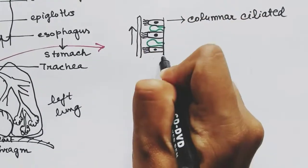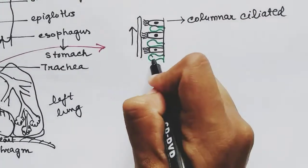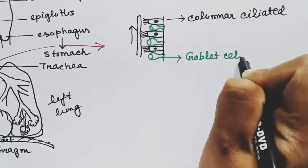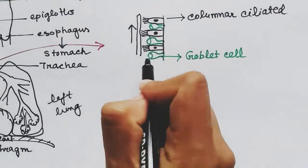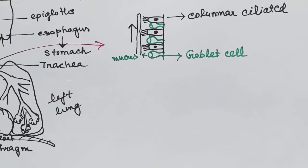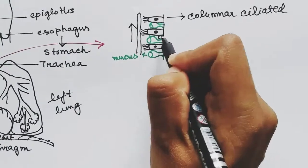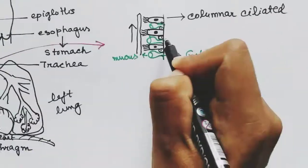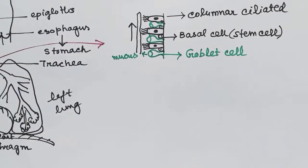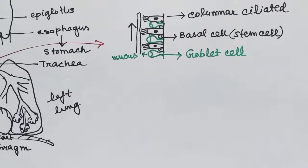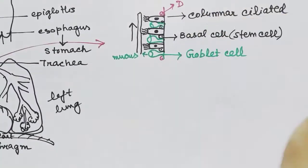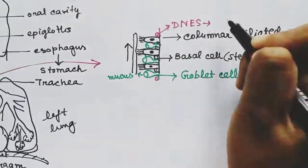Now these are goblet cells. These cells release the mucus. This mucus helps in capturing pathogens, dust, etc. Now these cells are basal cells—these are stem cells, these can give rise to other cells. Next cell is DNES—these are endocrine cells, can release hormones.